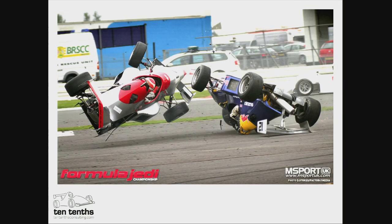Why am I showing you this? Well, this is the kind of thing that can happen when we start having multiple threads all trying to share resources. In this particular example it was two cars trying to share a resource known as a racetrack. But when we're writing code, the resources we're trying to share are memory and threads and locks and all the rest of it. So what I'm talking about today is basically how do we make sure we have lots of this without having any of that.